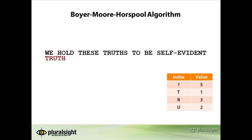We start by comparing the h in the word 'truth' with the o in the word 'hold'. These characters do not match. The bad match occurred with the letter o in the word hold. We consult the bad match table and see that o does not exist in the table, so the default value 5 is returned, and we skip the word truth forward 5 characters. Since o does not occur anywhere in the word truth, there is no reason to compare o to any character in truth, so we can skip all the way past it — and in doing so, we also get to skip past all the characters that precede it. We performed one comparison operation and skipped ahead 5 characters; it would have taken the naive algorithm 5 comparisons to get to the same point.